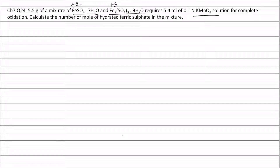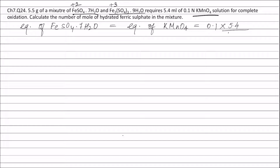Therefore, equivalents of FeSO4·7H2O equals equivalents of KMnO4 solution. Equivalents of KMnO4 solution equals normality (0.1N) multiplied by volume in liters (5.4 divided by 1000), which equals 0.54 divided by 1000 equivalents. Therefore, equivalents of FeSO4·7H2O also equals 0.54 divided by 1000.